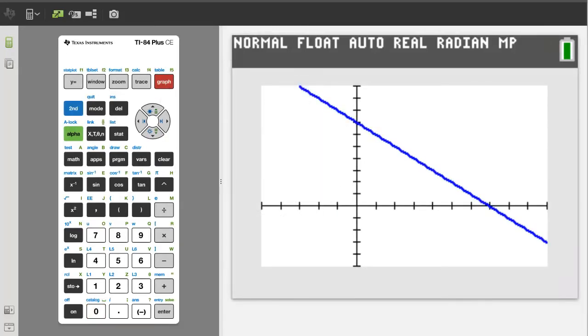Now we see that the line appears to cross the y axis at a positive 7 and cross the x axis at a positive 7 also.